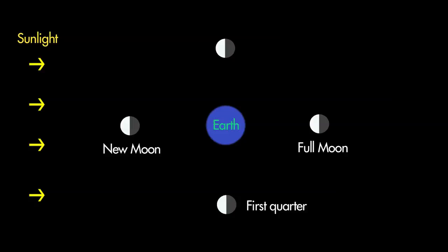Then the amount of the face illuminated begins to shrink or wane until we see another half moon known as last quarter. Several days later the cycle is completed as the crescent moon wanes all the way back to a new moon.